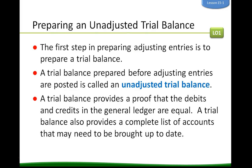The first step in preparing adjusting entries is to prepare a trial balance. A trial balance is prepared before adjusting entries are posted and is called an unadjusted trial balance. It provides proof that the debits and credits in the general ledger are equal, and also provides a complete list of accounts that may need to be brought up to date.